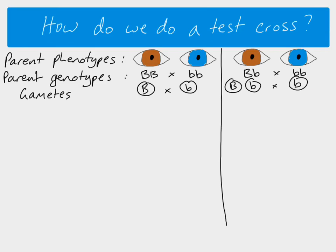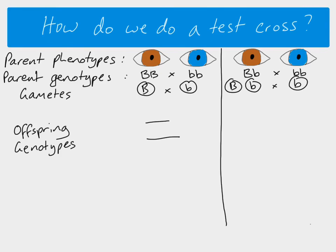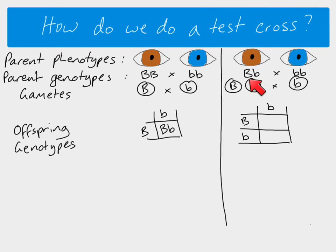The recessive parent can only produce little b gametes. So we either have the homozygous dominant gametes combining with the recessive, or the heterozygous gametes combining with the recessive. If you do a quick Punnett square, the only possible offspring genotype when the brown-eyed parent is big B big B is heterozygous. However, if the parent's unknown genotype was heterozygous, we would expect two different genotypes in the offspring, one of which would be the homozygous recessive genotype.